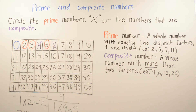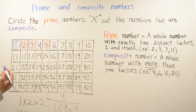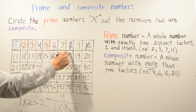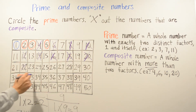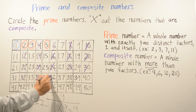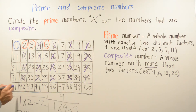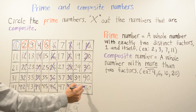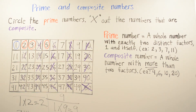If you already know that a number is even, you know it's composite because you can multiply 1 times itself, and also 2 times another number. So I'm going to X out all the even numbers because I know they're going to be composite. Counting by 2s: 14, 16, 18, 20, 22, 24, 26, 28, 30, 32, 34, 36, 38, 40, 42, 44, 46, 48, and 50. All those numbers are composite because they're even.